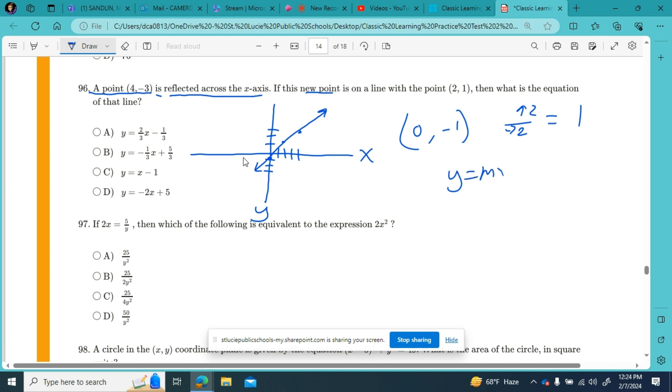So y equals mx plus b. I can use my slope-intercept formula and plug in a 1 for my slope, and plug in a negative 1 for my y-intercept, and I can see that the answer is C. That looks like a nice, fair question, similar to what we've done in an Algebra 1 class. Moving forward to question number 97.